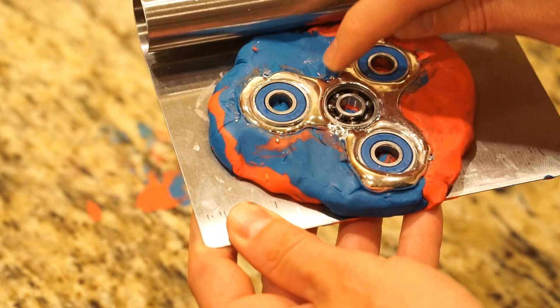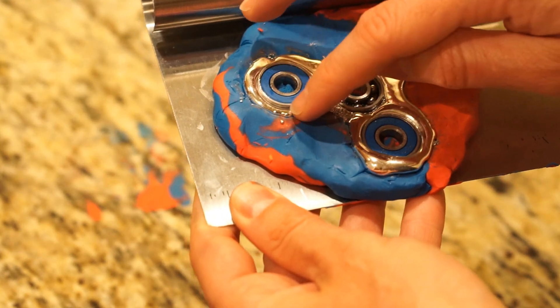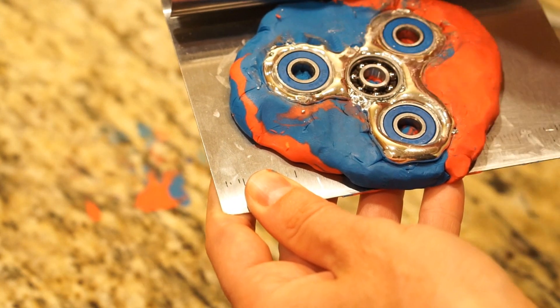Okay, here's our liquid metal fidget spinner. I'm gonna let it harden for a little bit in the fridge, then we'll crush it.